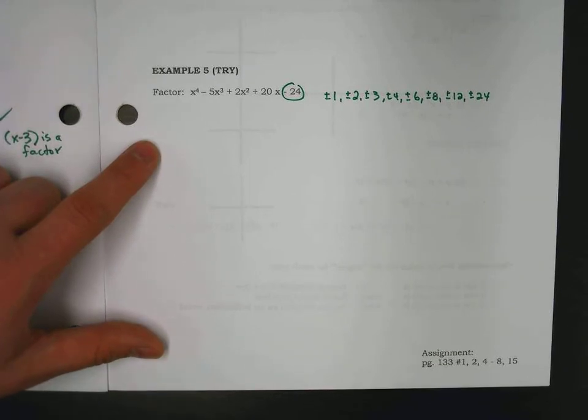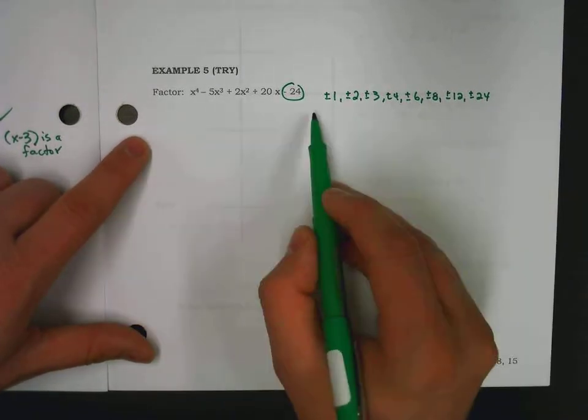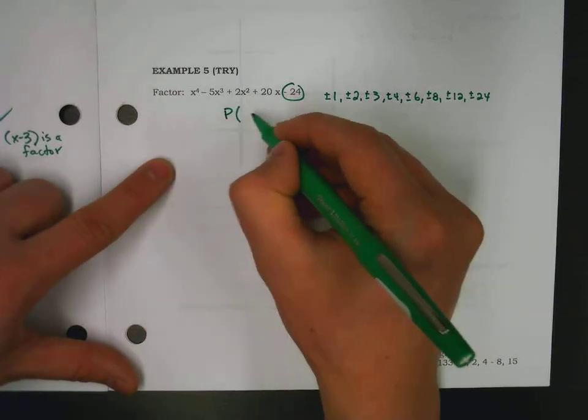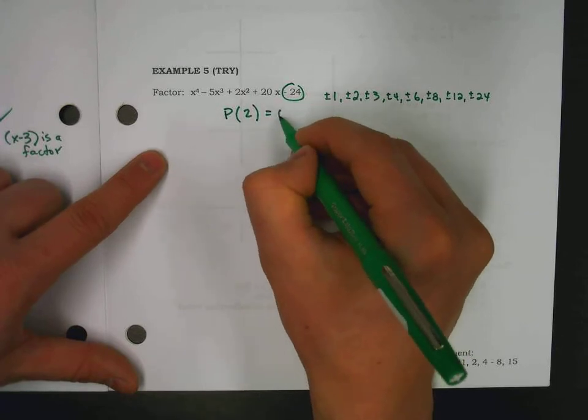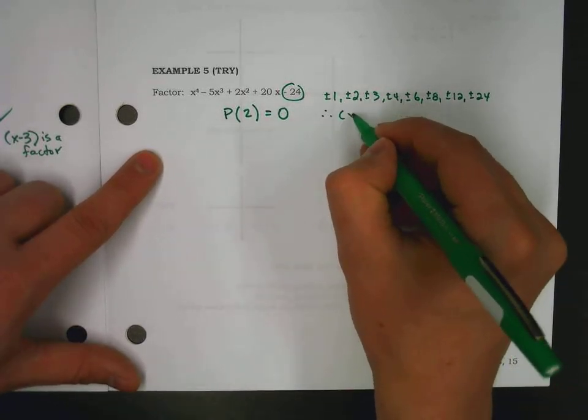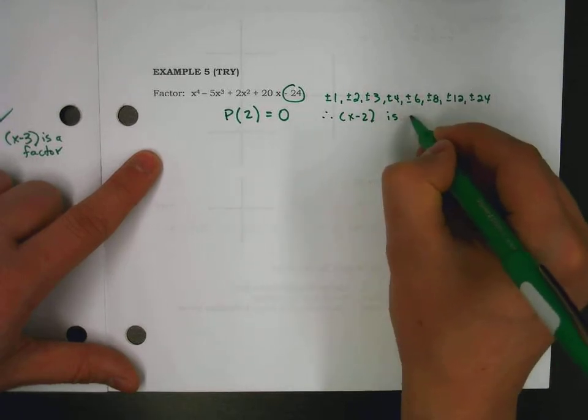Only one of these matters right now. So, if we were to keep trying, one of these would eventually work if this does factor. If you do plug in a 2, 0 does work. Therefore, x minus 2 is a factor.